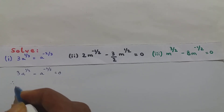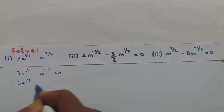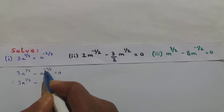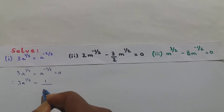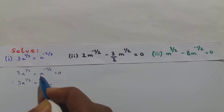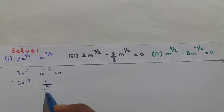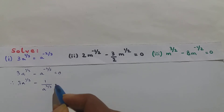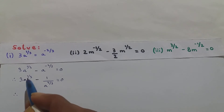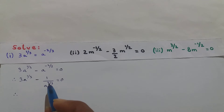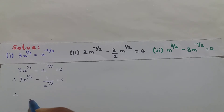Now a to the power minus 2/3 I can write as 1 upon a to the power 2/3. So the expression becomes 3a to the power 1/3 minus 1 upon a to the power 2/3 equals 0. Here the LCM is a to the power 2/3.